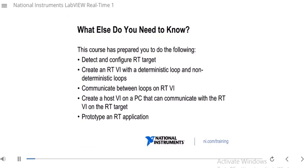So what else do you need to know? Let's first start with what this course has prepared you to do. Now you can detect and configure an RT target. You can create an RT VI with a deterministic loop and non-deterministic loop, and you can communicate between those loops on your RT VI. You can also create a host VI on your host computer and communicate between it and the RT VI on your RT target — communicating latest values and buffer values. You now have the skills to prototype an RT application.